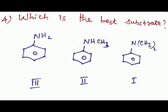Question four: which is the best substrate — N,N-dimethylaniline, N-methylaniline, or aniline? The substrate must contain electron-releasing groups. N,N-dimethylaniline contains two methyl groups, so it donates electrons most effectively and is the best substrate. The order is: N,N-dimethylaniline (1st) > N-methylaniline (2nd) > aniline (3rd).